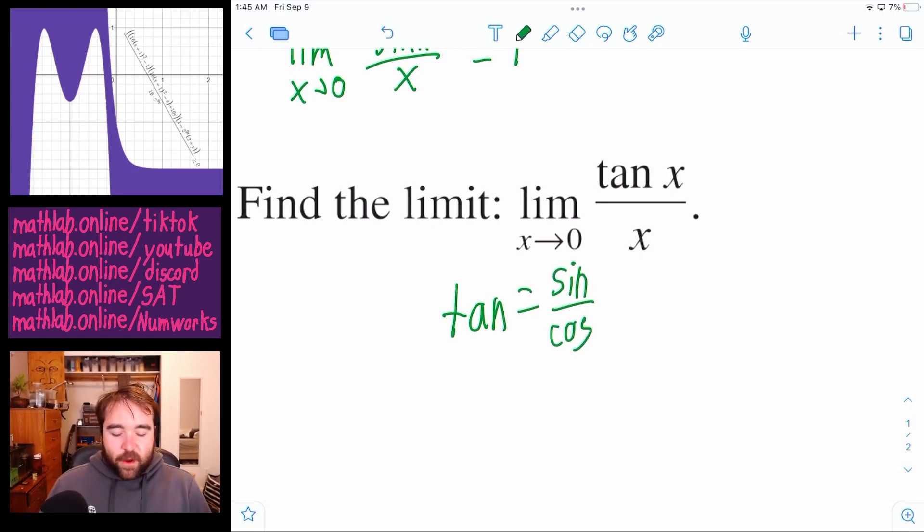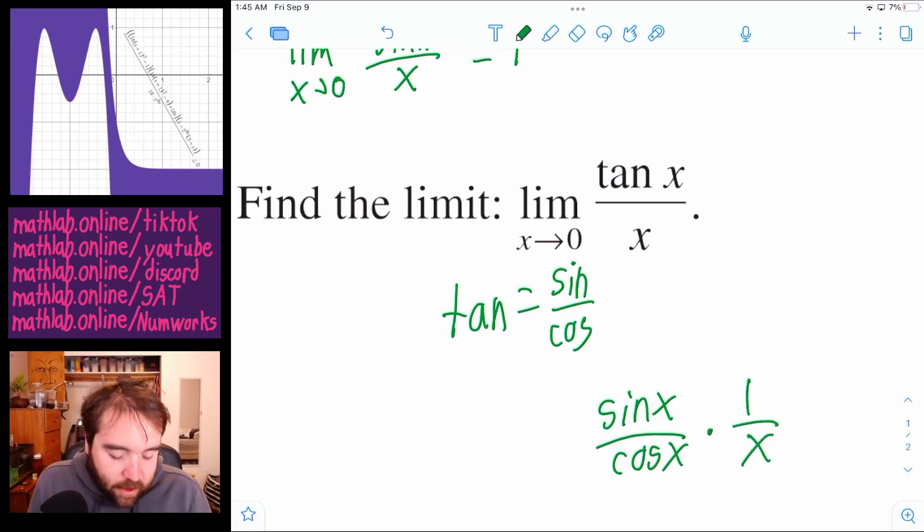So what we have right here is the sine of x over the cosine of x times one over x, however you want to write it. But that tan of x has become sine over cosine. And then we still have the one over x.